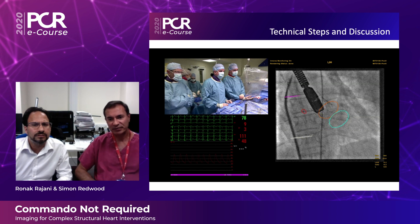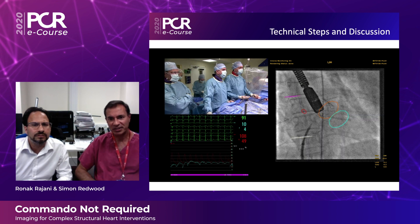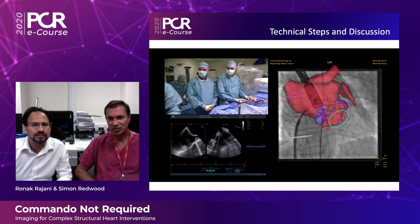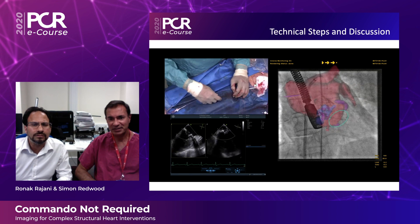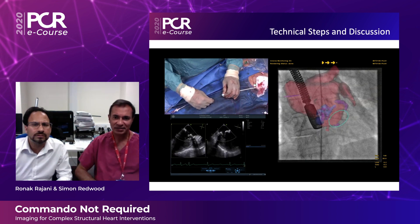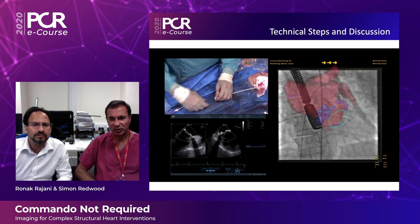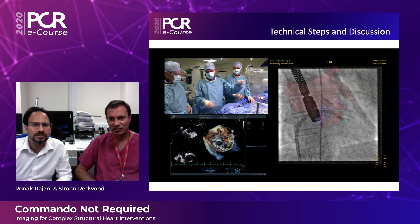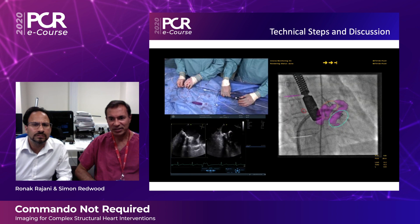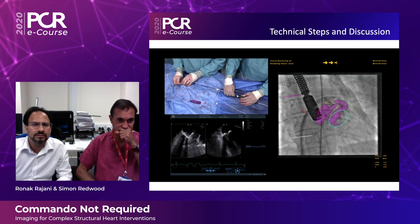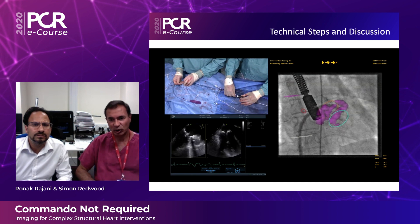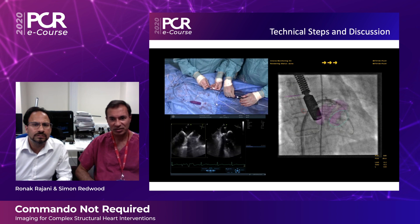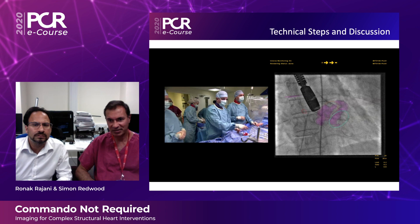Here we are just about to perform the transeptal puncture, and I'm exchanging the transeptal kit in order to bring an Agilis catheter into the left atrium. We pointed the Agilis down through the mitral valve, introduced a pigtail into the left ventricle, and then exchanged that for a safari wire. On the distal end of the safari wire I put an extra bend to mimic that bend going around into the left ventricle.